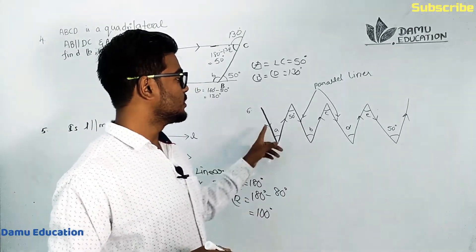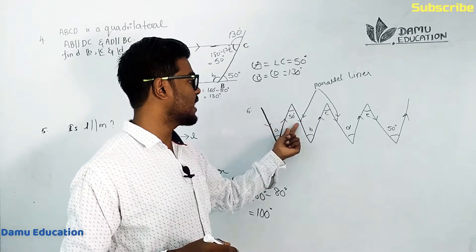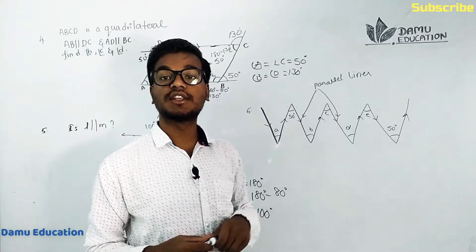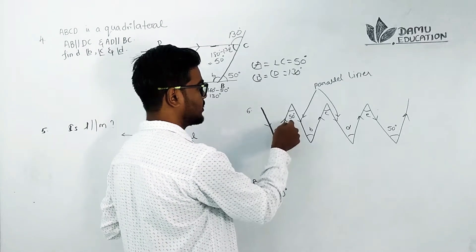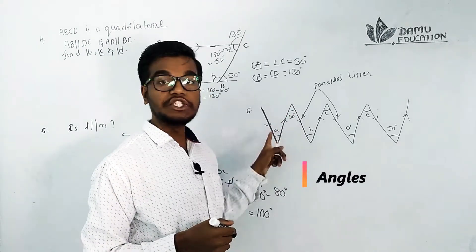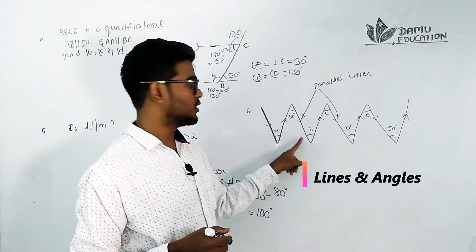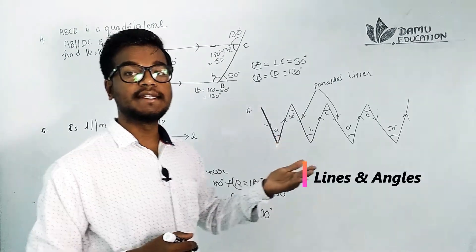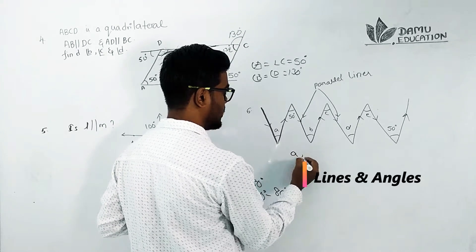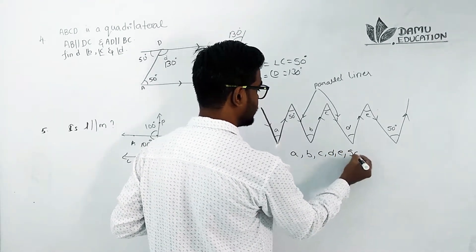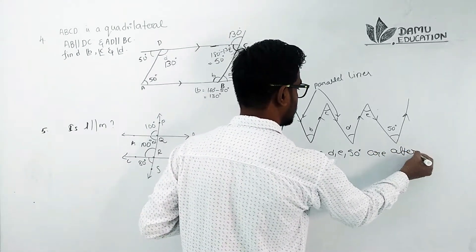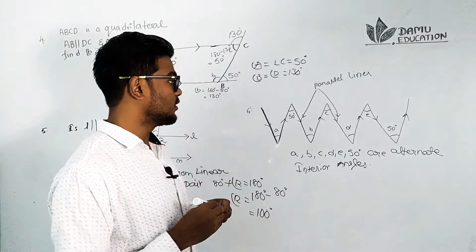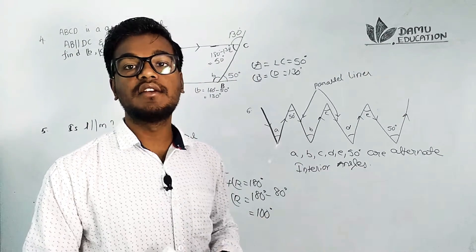For the sixth question, the same arrow lines indicate that the two lines are parallel to each other, and the middle line acts as a transversal. Angle A and 50 degrees are alternate interior angles — since these lines are parallel and the middle line is the transversal, alternate interior angles are always equal when two lines are parallel.